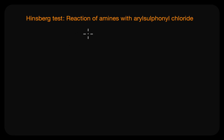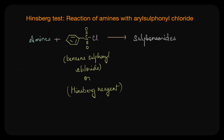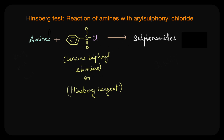In this video we are going to discuss another interesting reaction called the Hinzberg reaction or the Hinzberg test. The Hinzberg test is another classic chemical test that is used to distinguish between primary, secondary, and tertiary amines. This is based on the reaction with Hinzberg reagent, which is benzene sulfonyl chloride. The product formed in this reaction is called a sulfonamide.